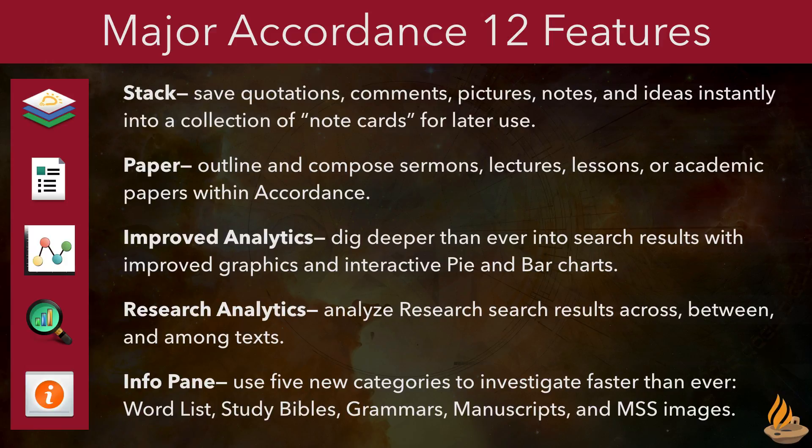The five new Info Pane categories are: Word List, Study Bibles, Grammars, Manuscripts, and Manuscript Images. Let's take a look at each of these in turn.